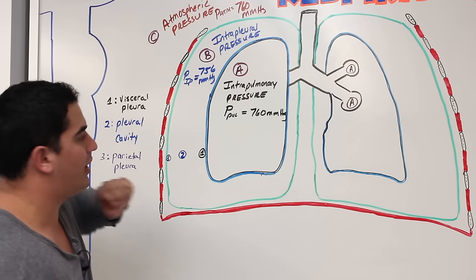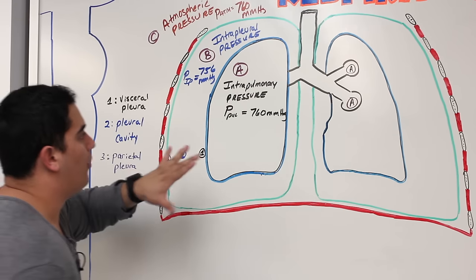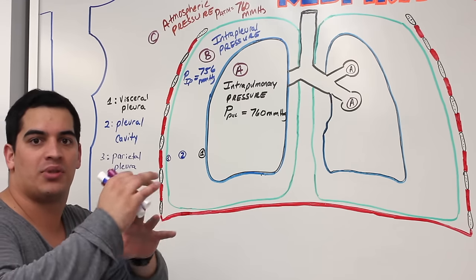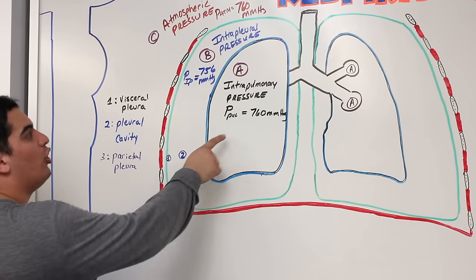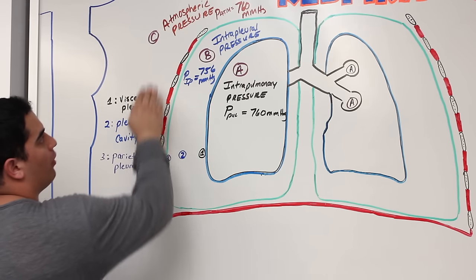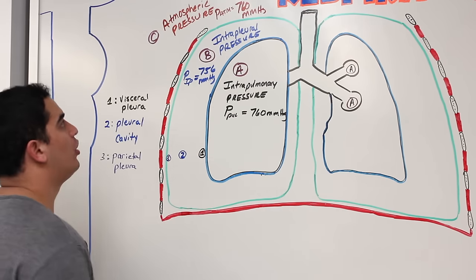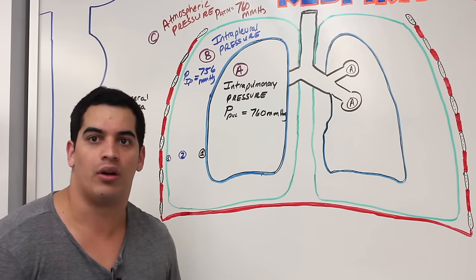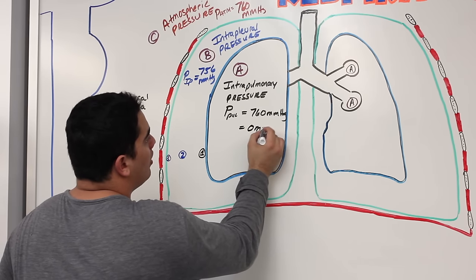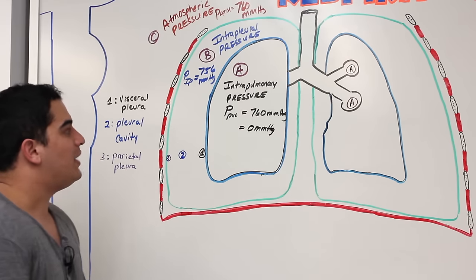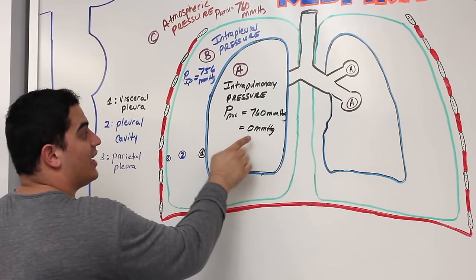Now I want to explain these pressures using the terms negative, positive, and zero — all compared to atmospheric pressure. The intrapulmonary pressure is 760 mmHg, and atmospheric is also 760 mmHg, so 760 minus 760 equals zero. We can express intrapulmonary pressure as either 760 mmHg or zero mmHg — they're interchangeable, meaning it equals the atmospheric pressure.